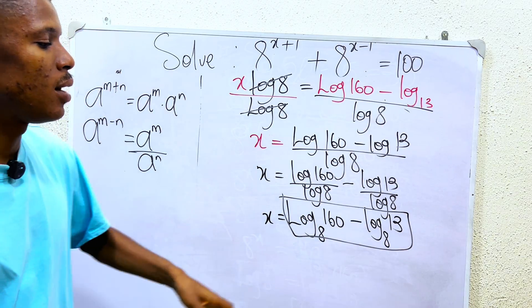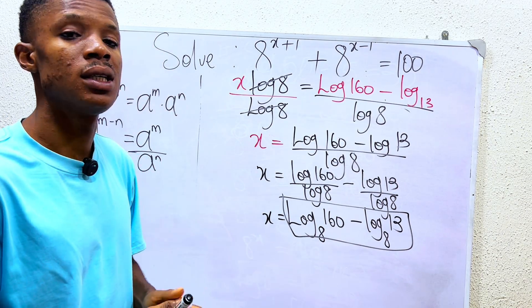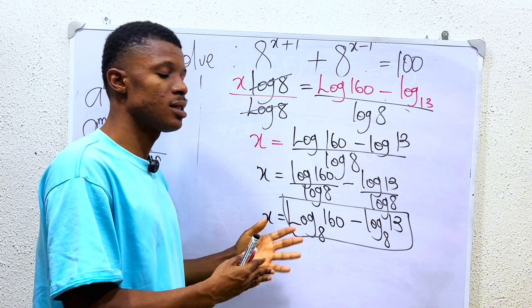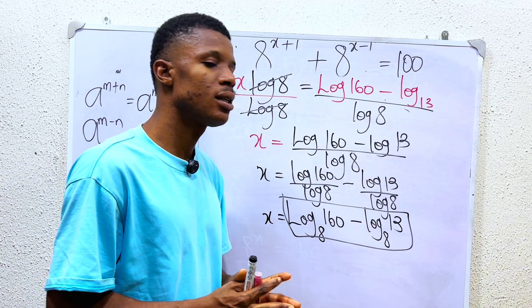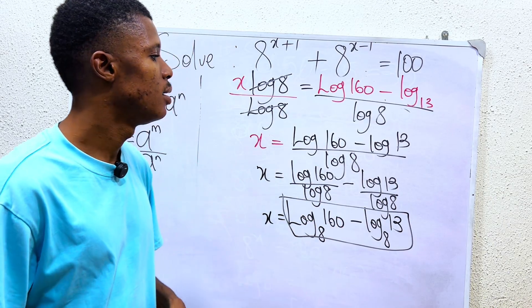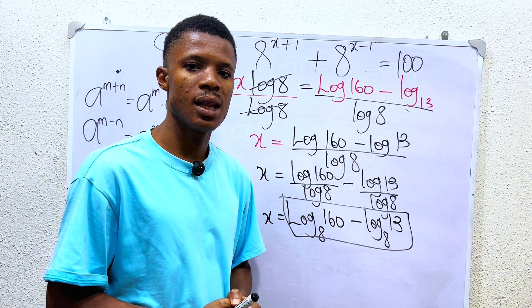This is how the answer looks like. You can actually do it as log base 8 of 160 over 13. Once you punch it in the calculator, you're definitely going to get the same answer. Like and share for more tips like this.